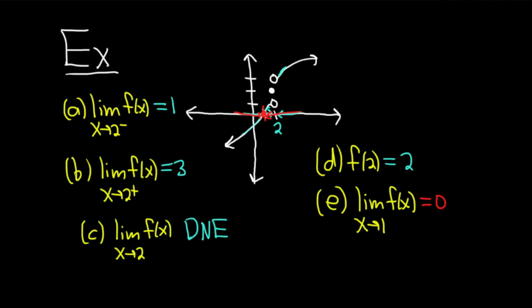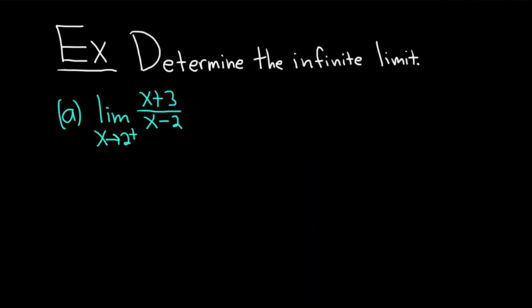Now that you've seen some examples of limits from a graph, let's jump into something a little bit different: determining the infinite limit. Let's do part a. We want the limit as x approaches 2 from the right of (x + 3) / (x − 2). These problems are a little tricky because there's no algebraic way to work it out — let me show you how to do it.